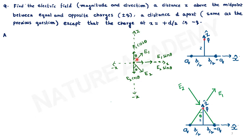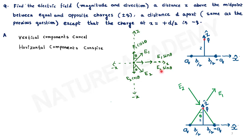The electric field E1 due to the positive charge points away from it, and E2 due to the negative charge points toward it. Looking at the free-hand diagram, E1 and E2 components show that the vertical components (E1 cos theta and E2 cos theta) cancel each other, while the horizontal components (E1 sin theta and E2 sin theta) add together, since the charges are equal in magnitude. The resultant field is in the x-cap direction.